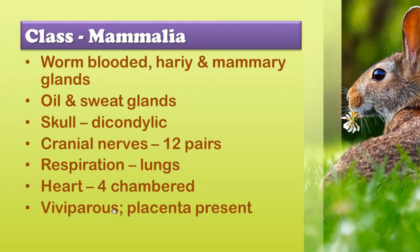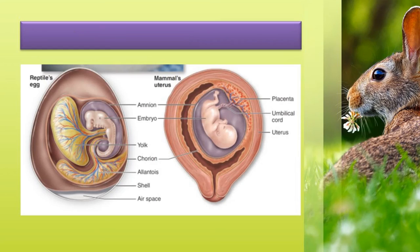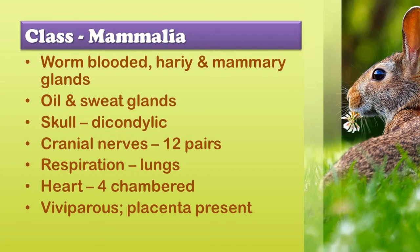The last class is Mammalia. Mammalia are warm-blooded animals and their body is hairy. They possess mammary glands, oil glands, and sweat glands on the skin. The skull is dicondylic — they have two condyles. Twelve pairs of cranial nerves are present. Respiration is through lungs. Heart is four-chambered. They are viviparous, giving birth to young ones. Placenta is present where the young ones are developed. The exoskeleton includes horny epidermal structures such as horns, spines, scales, claws, nails, hooves, and bony dermal plates.